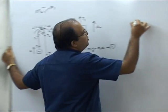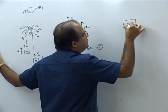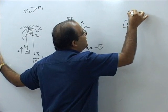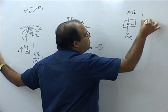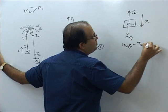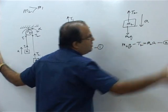If you look at the free body diagram of M2, M2G is acting down, tension T2 is acting up, acceleration is down. So M2G is greater than T2, so M2G minus T2 will be equal to M2A. This is equation number 2.